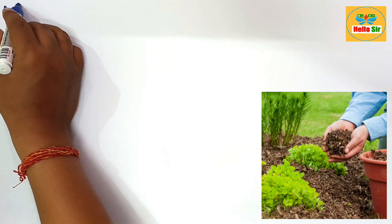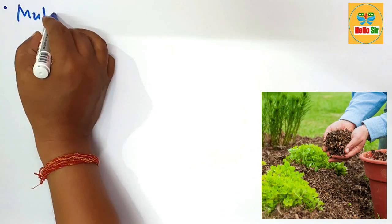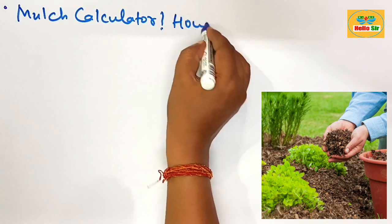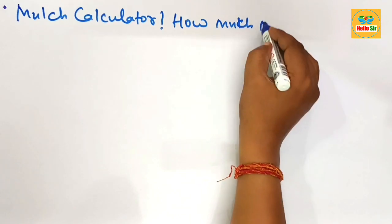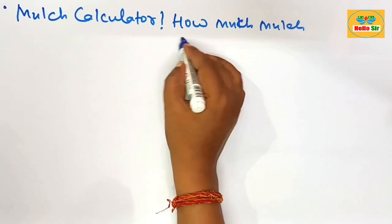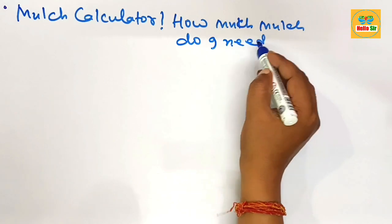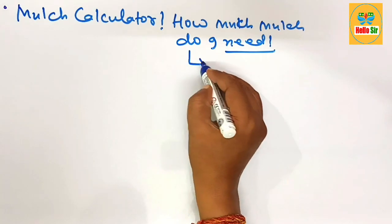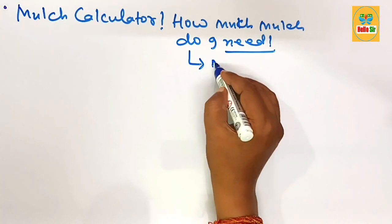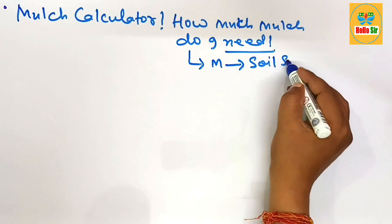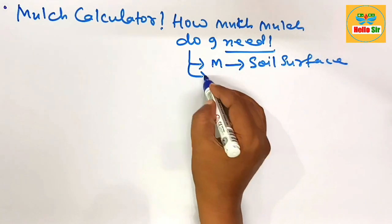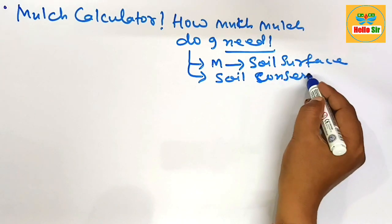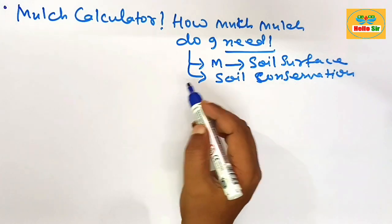Hey guys, in this video you'll learn about the mulch calculator — how much mulch do you need for your project. Mulch is a layer of material applied over the soil surface to improve soil conservation, moisture content, and the fertility of soil.